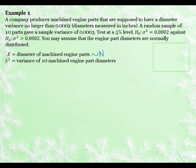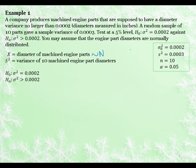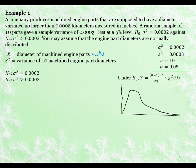Extracting the information: our hypothesized variance is 0.0002, our sample variance is 0.0003, sample size is 10, and alpha is 0.05. Our null and alternative have already been given — we can see we're doing an upper tail test. Because the data comes from a normal distribution, under the null hypothesis our test statistic y has a chi-squared distribution with 9 degrees of freedom. Drawing a sketch, and since it's an upper tail test, we need an upper tail rejection region — so now we just need to find our critical value from the chi-squared tables.